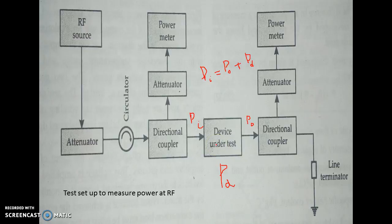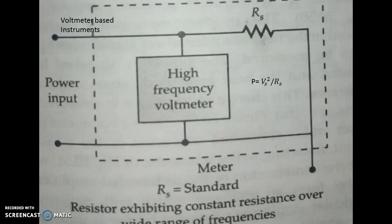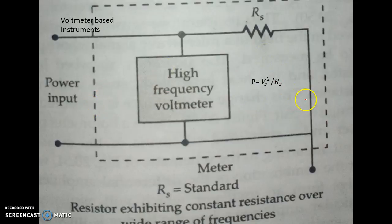Next, we have voltmeter-based measurements. In this method, we have a standard resistor that maintains its resistance value over a range of frequencies. We apply the RF input power to this resistor and a voltmeter measures the voltage across the resistor Rs. Power can then be calculated as Vs squared divided by Rs.